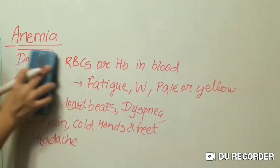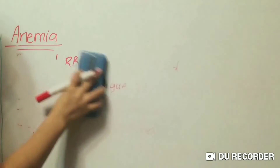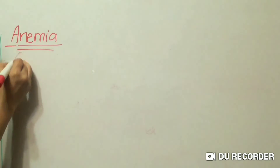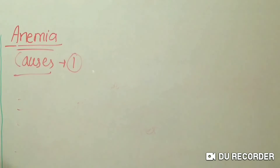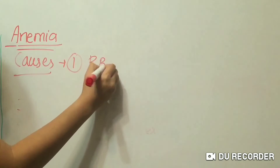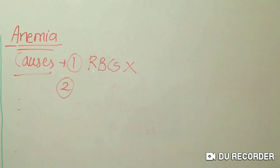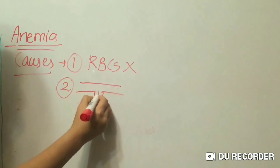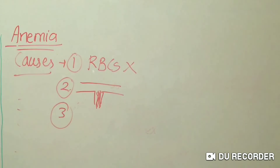What are the causes of anemia? First cause: your blood doesn't make enough RBCs or red blood cells. Second: bleeding causes you to lose red blood cells more quickly than they can be replaced. Third: your body destroys RBCs.